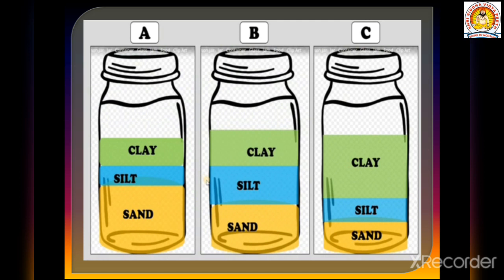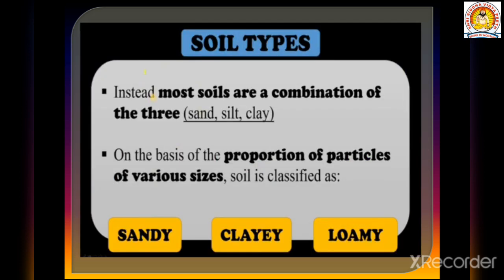Here you can see the layers: first clay, then silt, and then sand. You will obviously get to see each layer separated in the soil. Now there are some types of soil as well. We have learned that particles are available in soil in many layers, and now we will learn the types of soil.